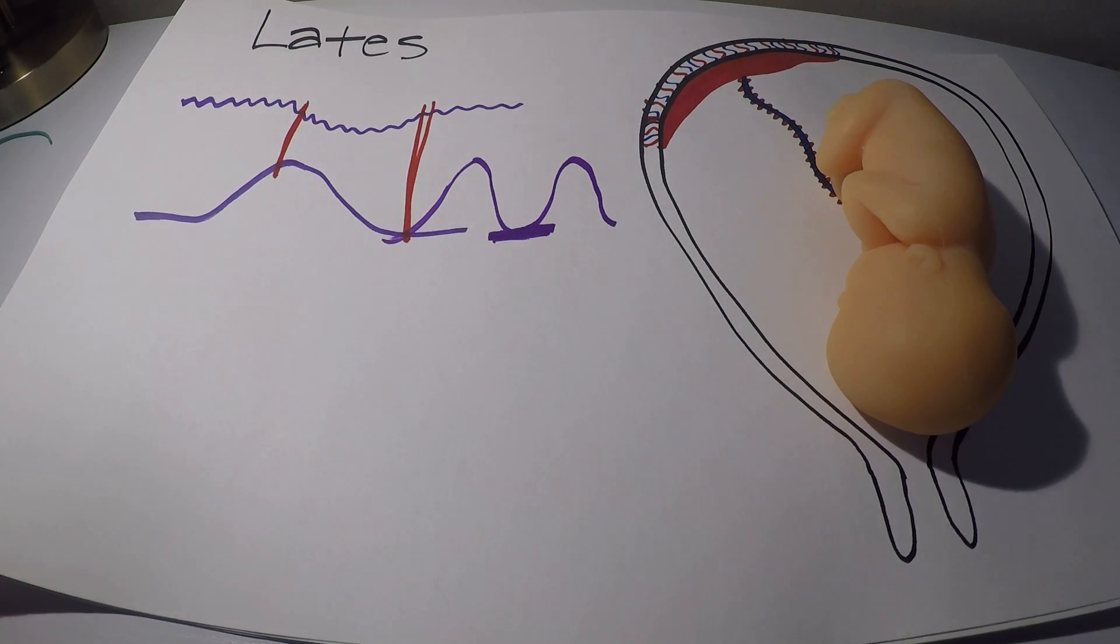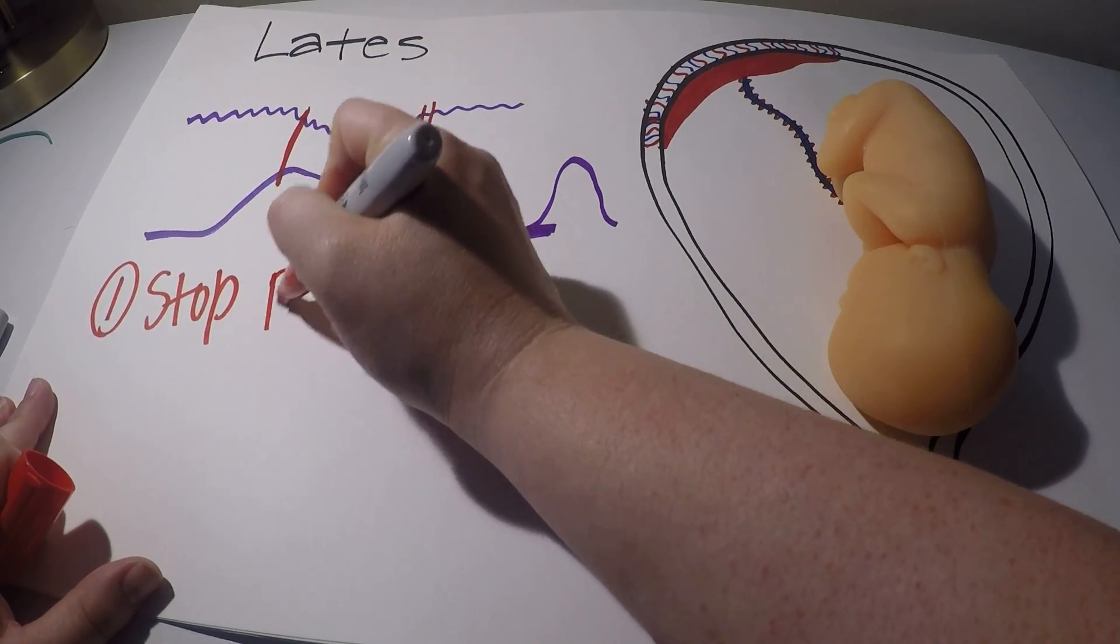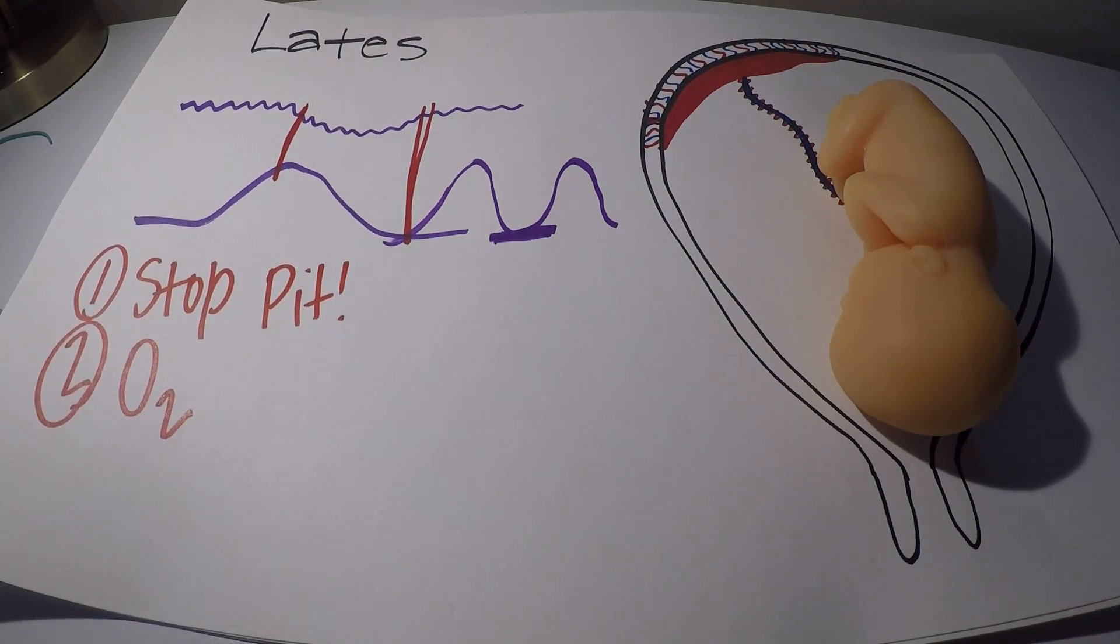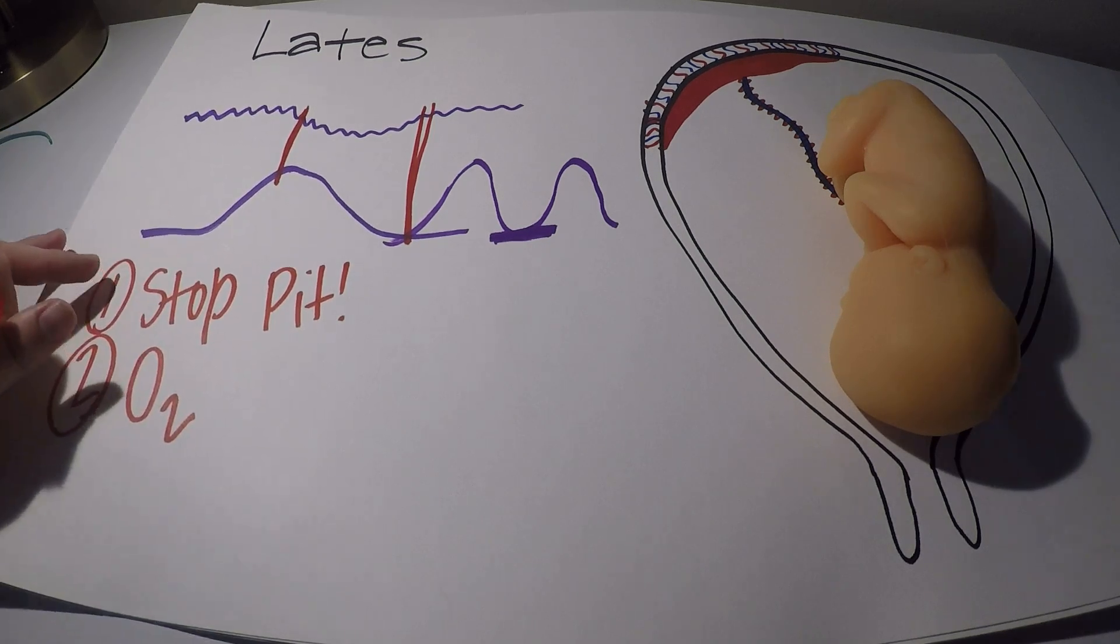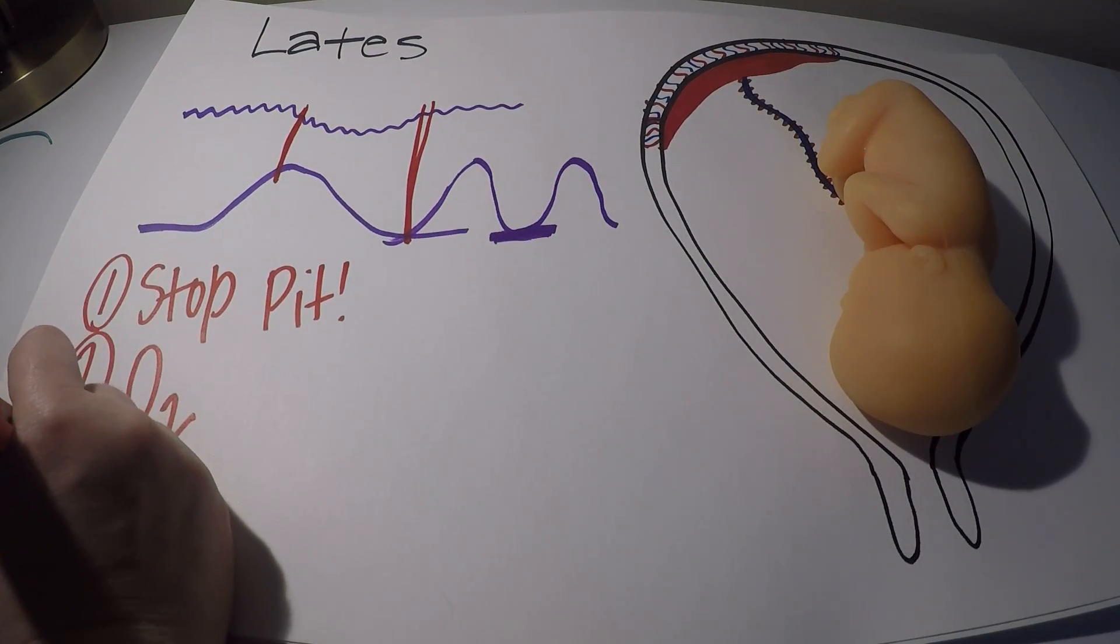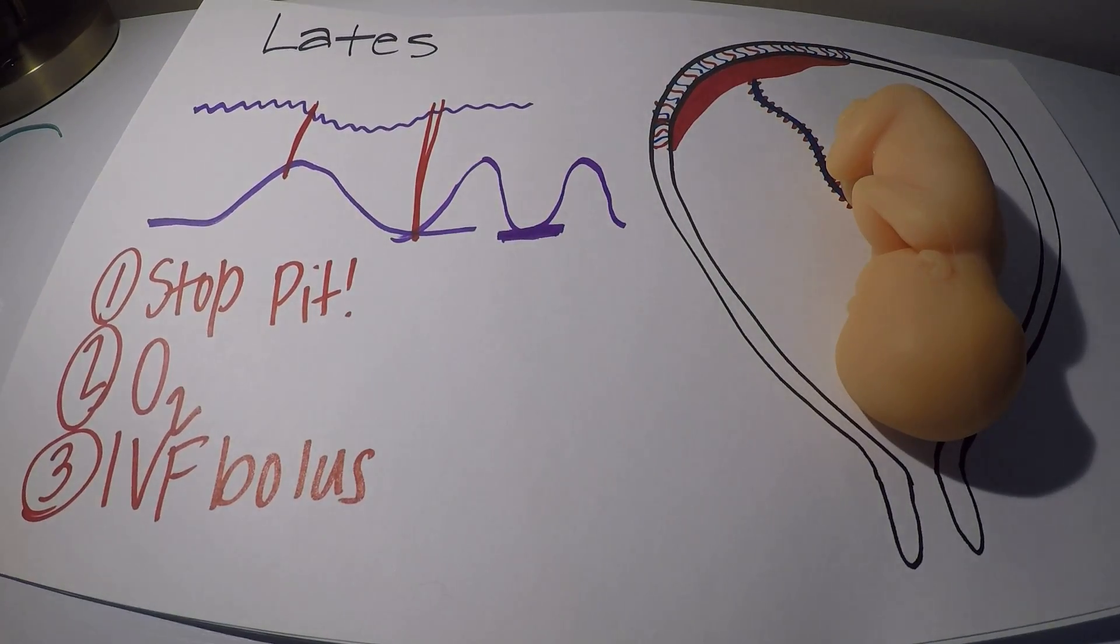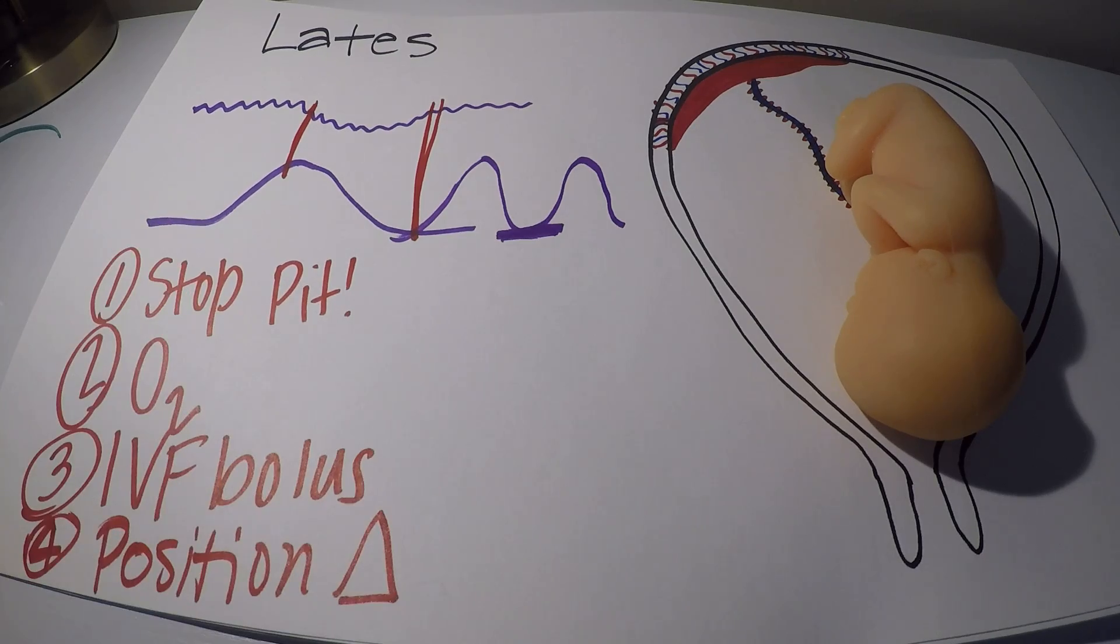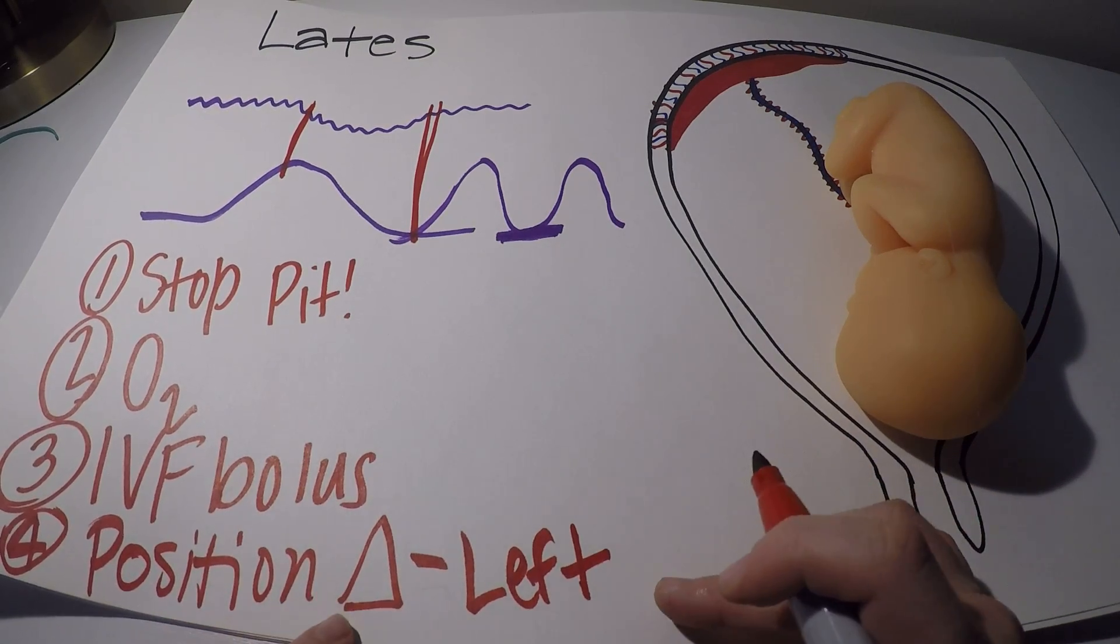So the very first thing we're going to do if we're having late decelerations is we're going to stop our Pitocin if we have it going and we're going to apply oxygen. And again, when we're applying oxygen, we're doing 10 to 12 units via non-rebreather. These two, I typically kind of do simultaneously. I will stop my Pitocin while I'm reaching for my oxygen with my other hand. So those are your two big ones here. The third one is IV fluid bolus. And then the last intervention is a position change. And again, we're going to put mom onto her left side if possible, because the left side is going to be the best for perfusing the placenta.